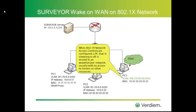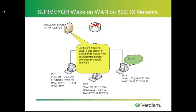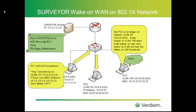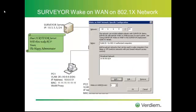In an 802.1x secured network, a PC when it falls asleep is moved to a different network — an unauthorized network. When it turns back on again, it can be moved to an authorized network. But what happens when the Surveyor server tries to wake it up without configuration is that it still thinks it last talked to it on network 10.6.6. So it's going to ask the Wake on LAN proxy for that network to wake it up, but that broadcast doesn't reach PC3 because it's been moved to a different network. With the new version of Surveyor, you're able to configure — as in this example — that when systems are on network 10.6.6, we should try to awaken them on a different network, which is the unauthorized network number.